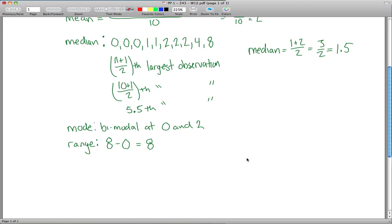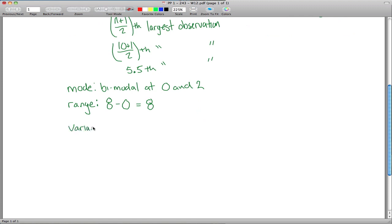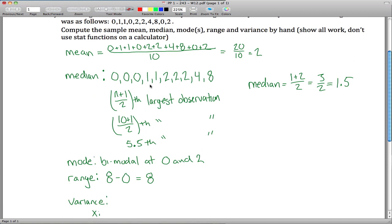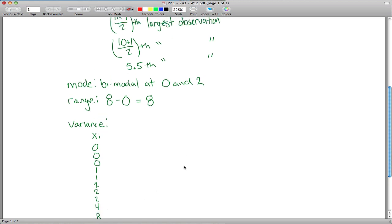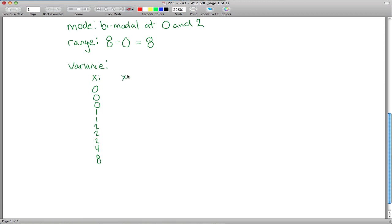And what we saved for last was the hardest one, it's the variance. And the way we'll get that is by making a table. Usually you call your first column x sub i, this just kind of means all your observations. So what do we have, three 0's, two 1's, three 2's, a 4 and an 8. And then the next column you set up is usually write x bar, it's just the mean. So it's 2, you just copy those all the way down.